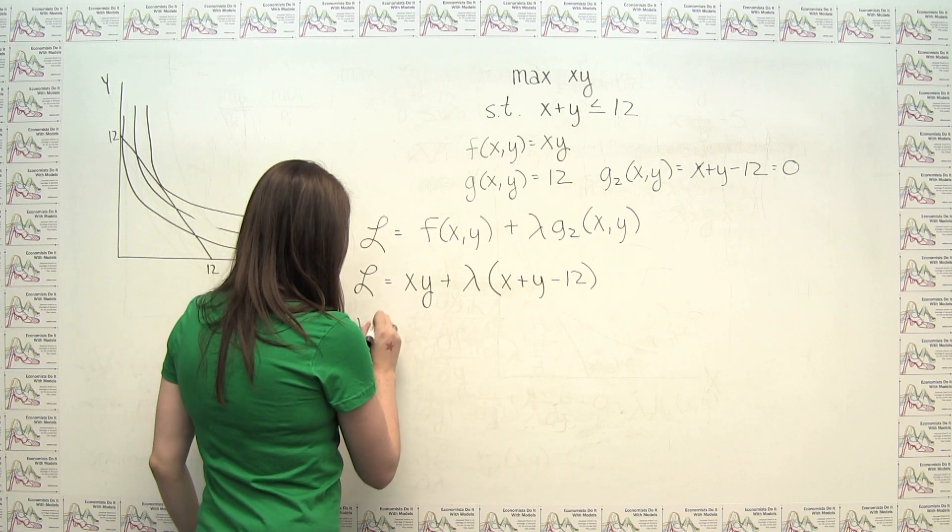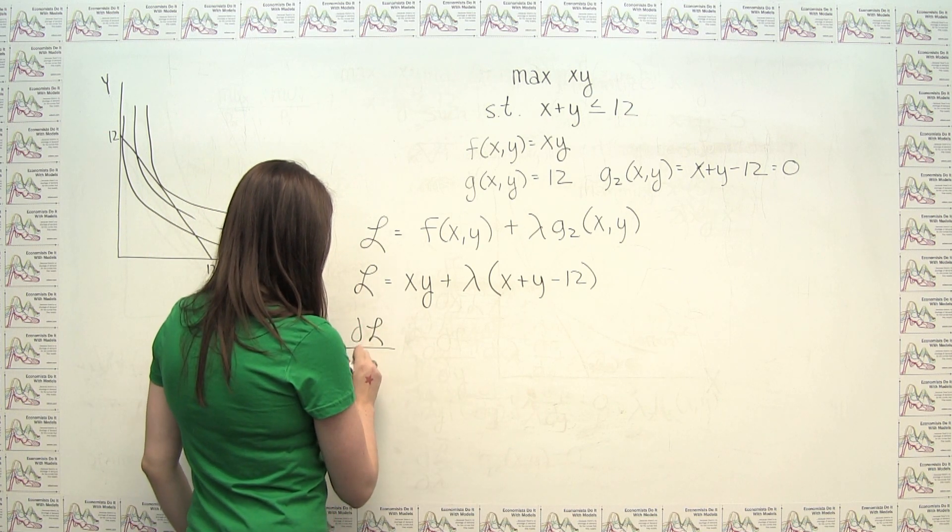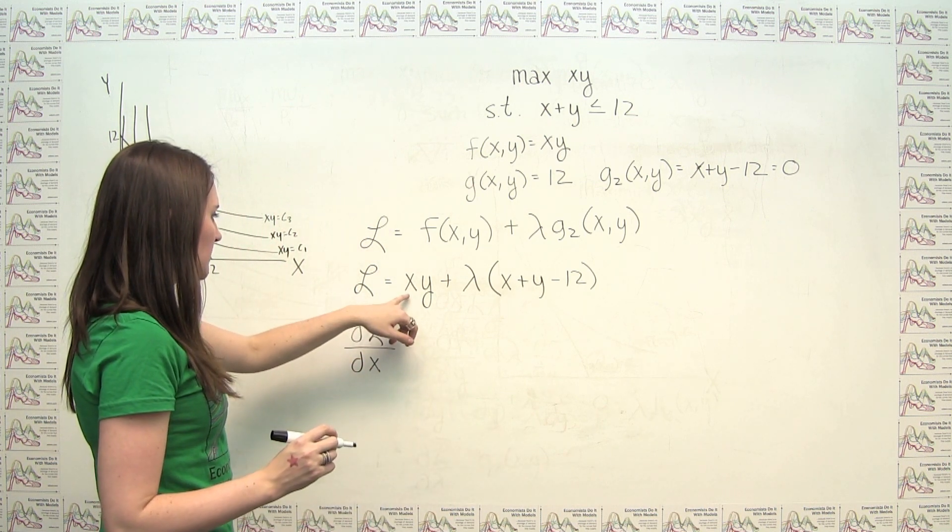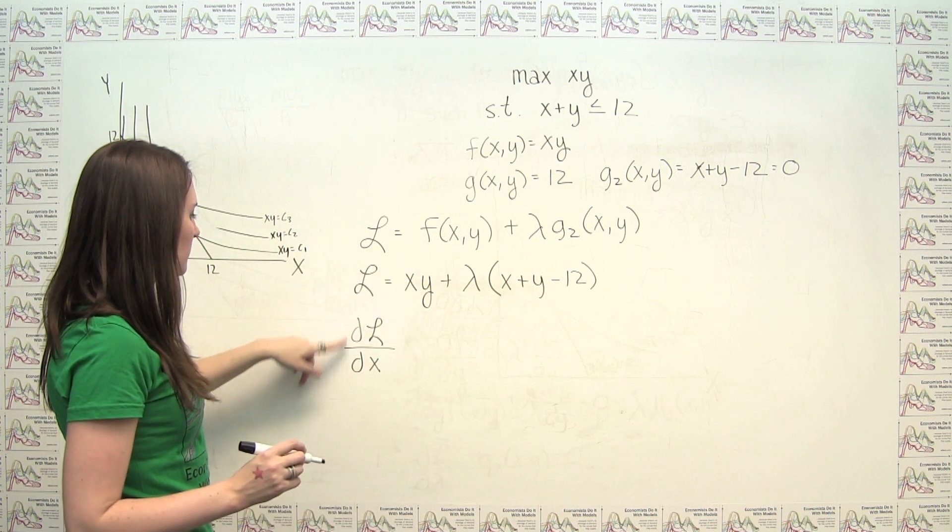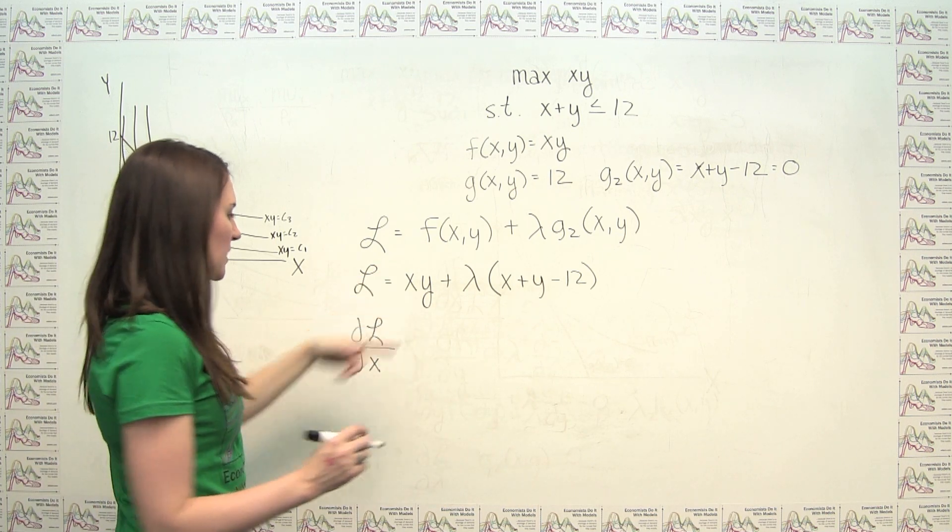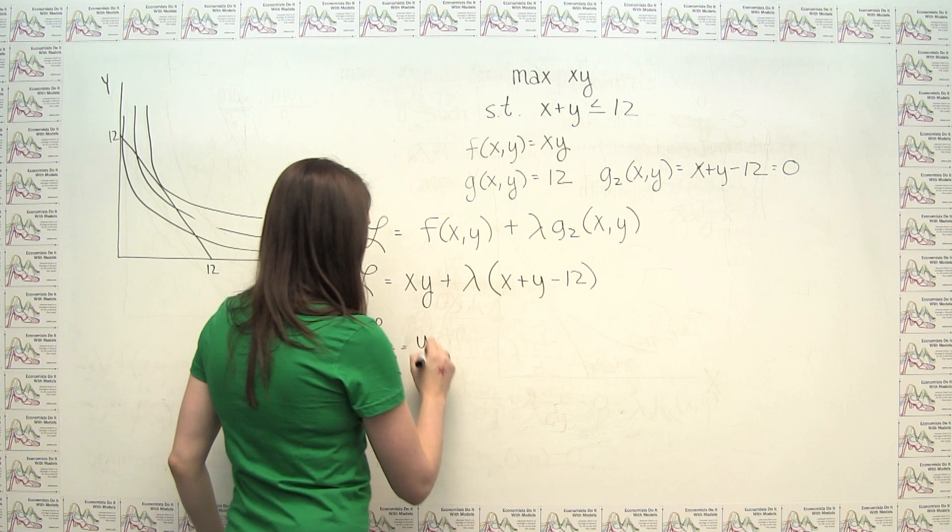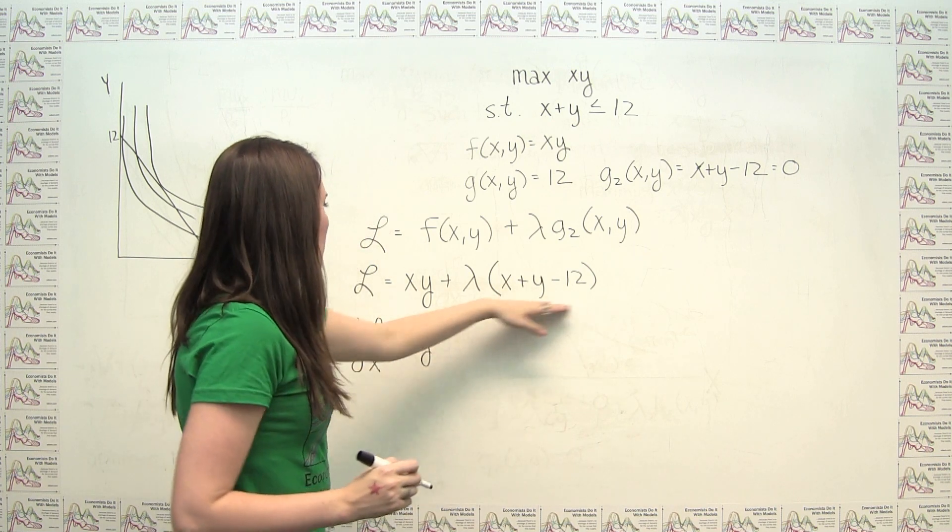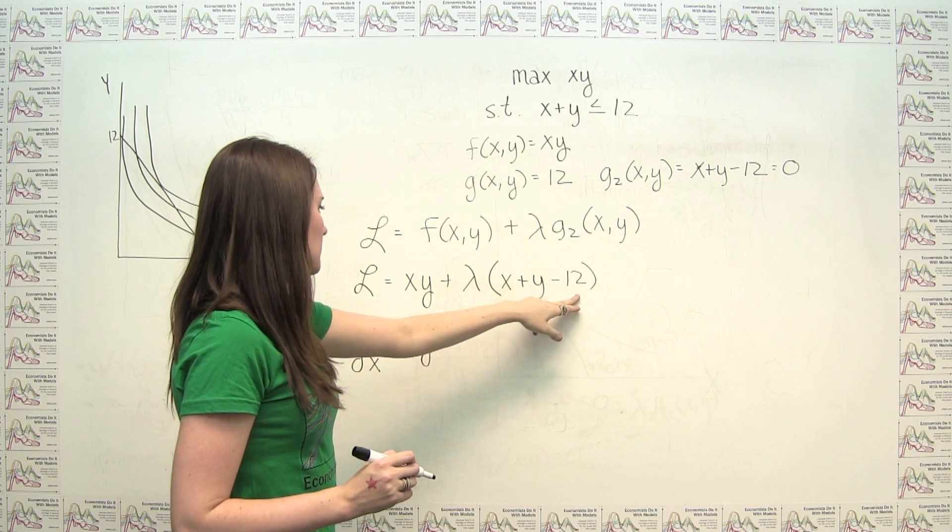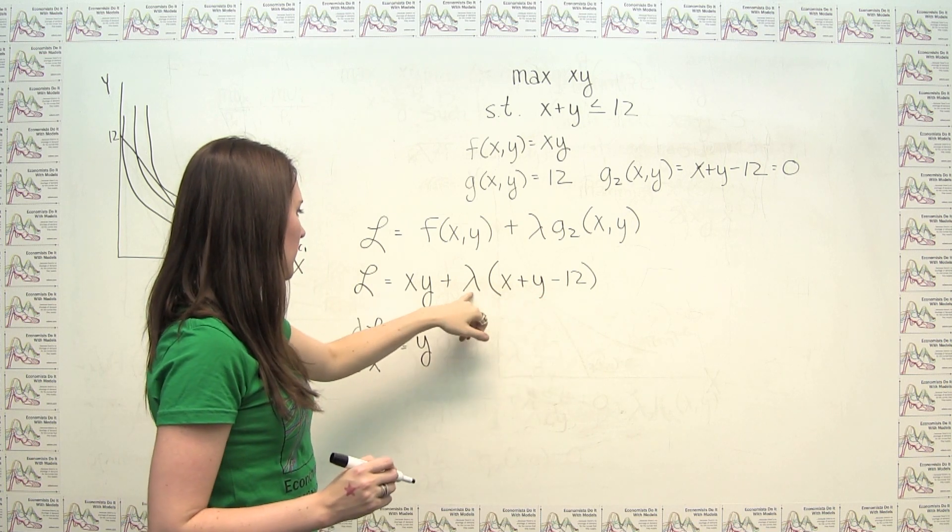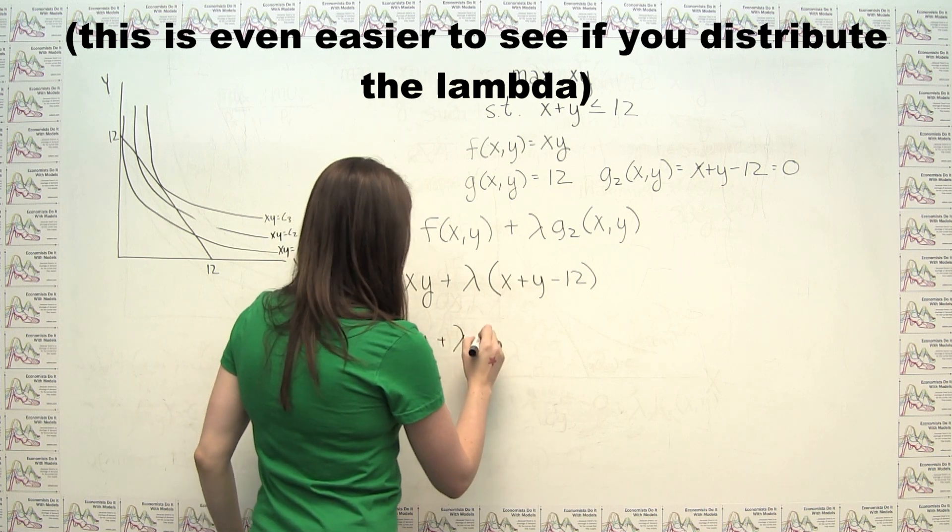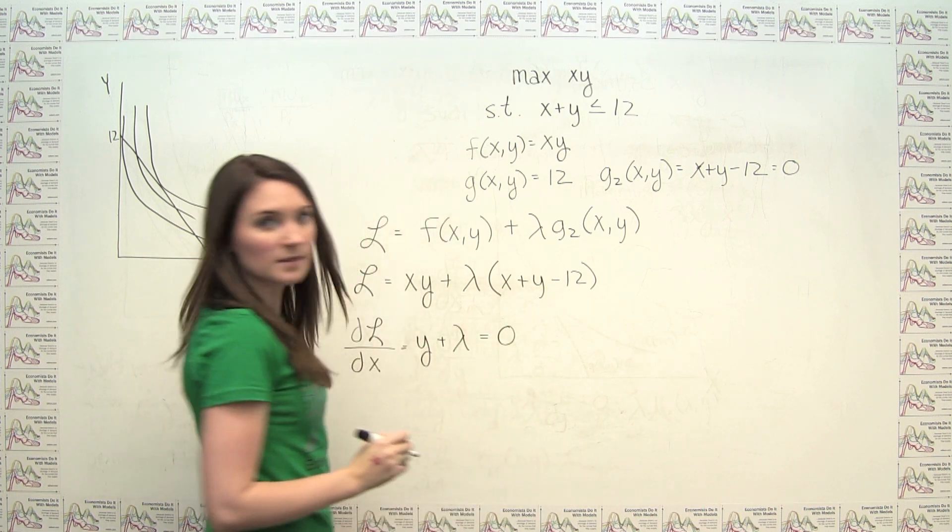We say, if dL dx has to equal zero, well that's just going to be, our partial of L with respect to x is just, the derivative of this with respect to x is just y. The derivative of this with respect to x, these guys are seen as constants. So the only thing multiplying x is this lambda. So you just get a plus lambda, and this has to equal zero.